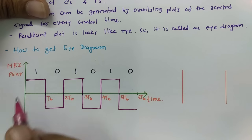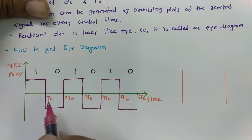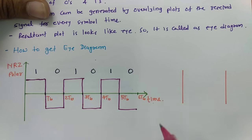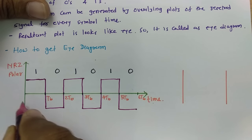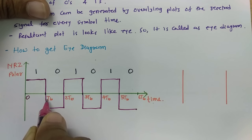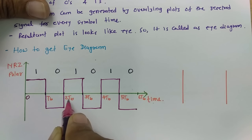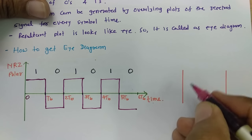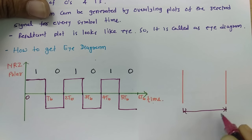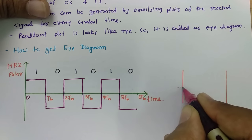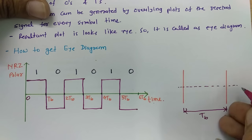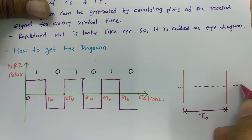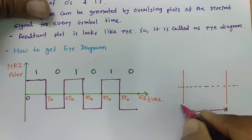Now if we want to plot the eye diagram from this ideal waveform, we need to consider the bit period first. The bit period starts from 0 to T_B for the first bit, T_B to 2T_B for the second bit, and 2T_B to 3T_B for the third bit. So I make a display with bit period T_B on the horizontal axis, and on the vertical axis I show magnitude — where this line shows zero magnitude, the top is maximum magnitude, and the bottom is minimum magnitude.